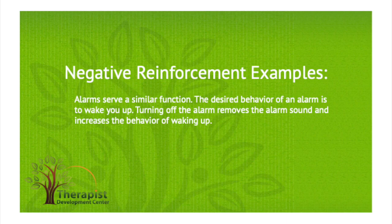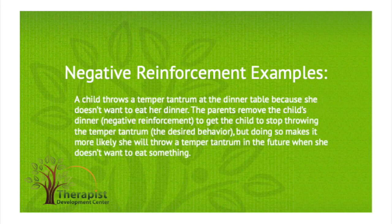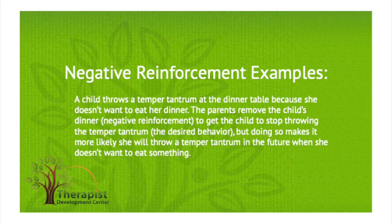Sometimes we unintentionally reinforce behaviors without realizing we're doing so. Number three: a child throws a temper tantrum at the dinner table because she doesn't want to eat her dinner. The parents remove the child's dinner — negative reinforcement — to get the child to stop throwing a temper tantrum, the desired behavior. But doing so makes it more likely she will throw a temper tantrum in the future when she doesn't want something to eat. The outcome: the child is more likely to throw a temper tantrum in the future when she doesn't want to eat something.